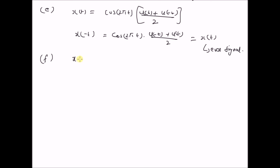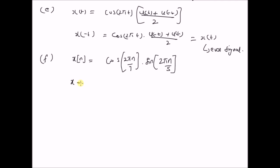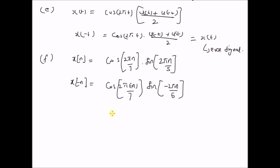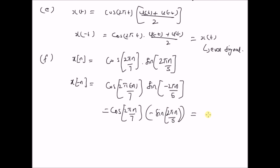The next example is x(n) = cos(2πn/7)·sin(2πn/5). Then x(−n) = cos(−2πn/7)·sin(−2πn/5), which equals cos(2πn/7)·[−sin(2πn/5)], and this equals −x(n). Therefore, x(n) is an odd signal.